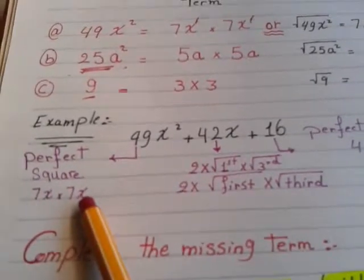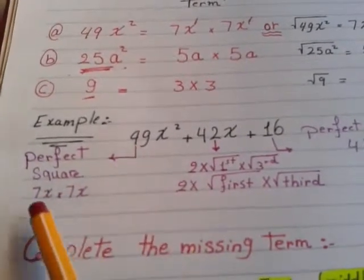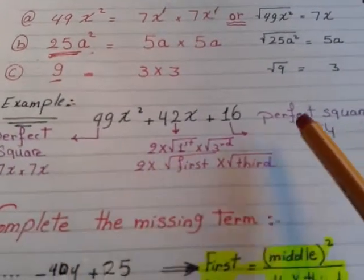First term must be perfect square. Or it has a root. Can I get root for 49 square root for 49x power 2? Yes. 7x by 7x. First term from 7x by 7x. Very nice.